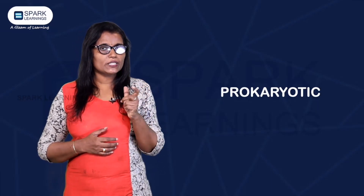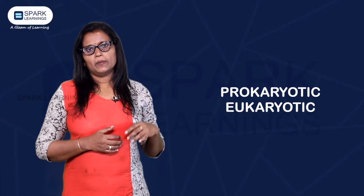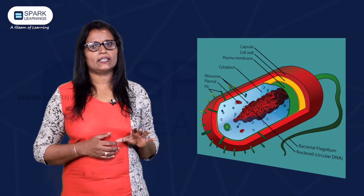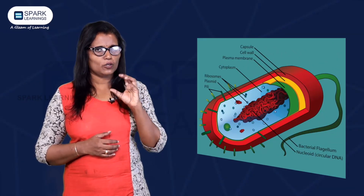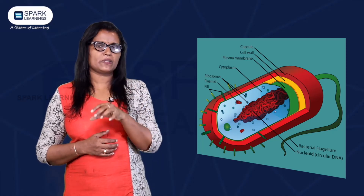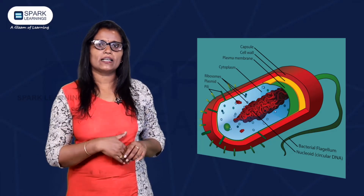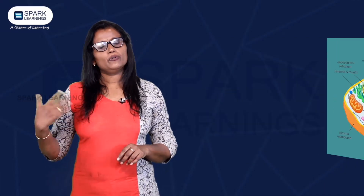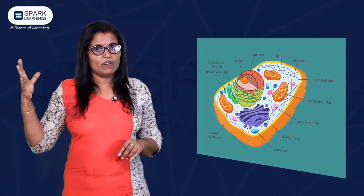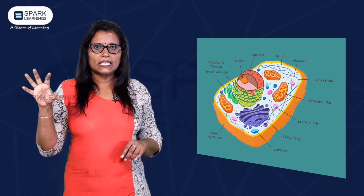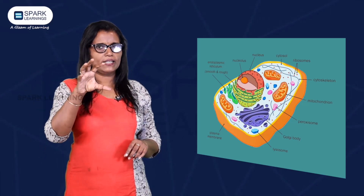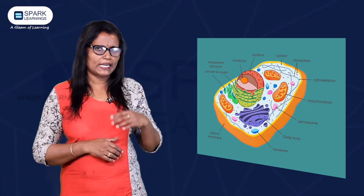The first classification of the cell is prokaryotic and eukaryotic cells. A prokaryotic cell does not possess a well-defined nucleus — there is no nuclear membrane. A eukaryotic cell, on the other hand, possesses a well-defined nucleus with a well-organized membrane.